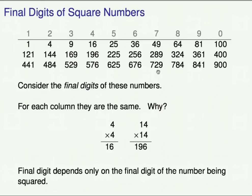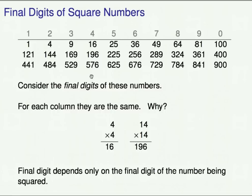We'll combine this with another observation: the final digit of a square depends only on the final digit of the number being squared. For example, 14 times 14 — in order to compute the result, you first write a 6 in the 1's place and carry a 1 to the 10's place, because 4 times 4 is 16. Further computations determine the 10's and 100's place digits, but those don't affect the digit in the 1's place. The digit in the 1's place depends only on the digit in the 1's place of the number being squared. That's why all numbers in a given column end in the same digit.